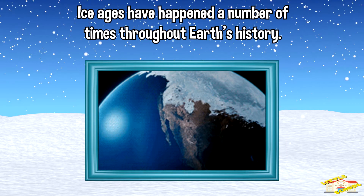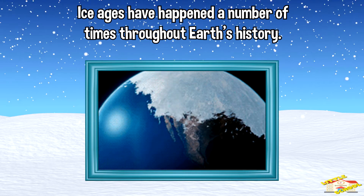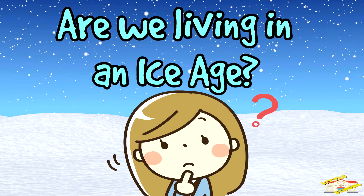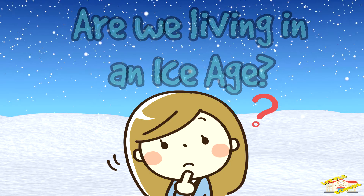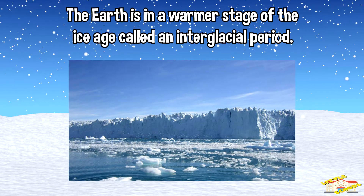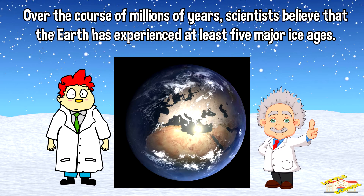Ice ages have happened a number of times throughout Earth's history. Are we living in an ice age? Yes, you may be surprised to know that we are currently living in an ice age called the Quaternary Ice Age. The Earth is in a warmer stage of the ice age called an interglacial period. Over the course of millions of years, scientists believe that the Earth has experienced at least five major ice ages.